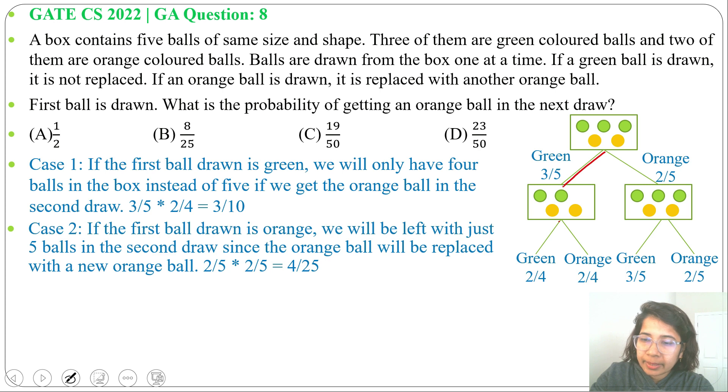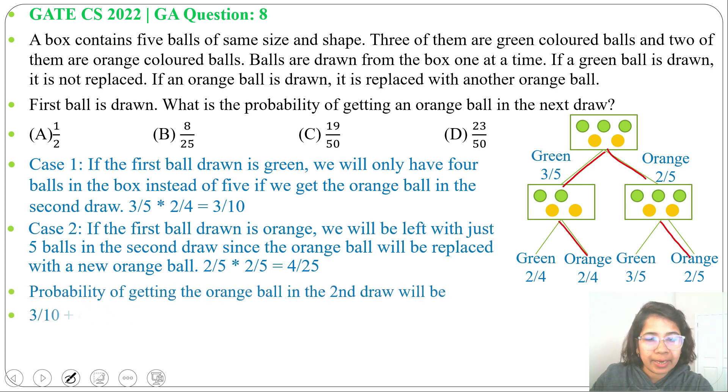Now probability of getting orange ball in second draw is 3 divide 10 plus 4 divide 25, it will be 23 divide 50. It's present in option D, so answer will be option D, 23 divide 50.